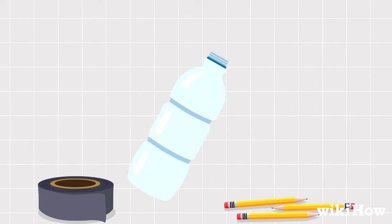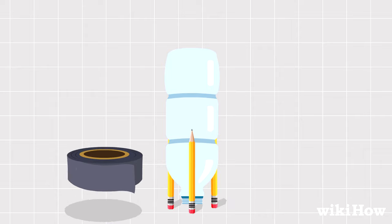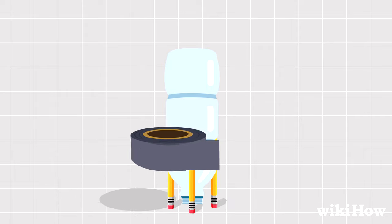First, use the duct tape to attach the pencils to the plastic bottle to make a stand for your rocket.